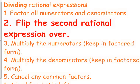The only difference out of the exact same steps, except there's an extra step in there. After you factor, then you flip the second rational expression over, and it becomes a multiplication problem. Dividing by a fraction, dividing by a rational expression, is the same as multiplying by the reciprocal.